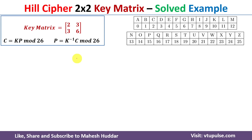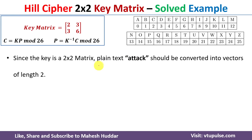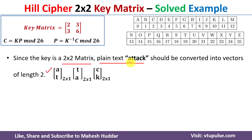Before we start encrypting the given data, for each and every alphabet we need to assign numeric values: A is assigned 0, B is 1, and so on up to 25. Since the key matrix is a 2x2 matrix, the plaintext 'attack' should be converted into vectors of length 2. The first vector contains A and T, the second contains T and A, and the third vector contains C and K.